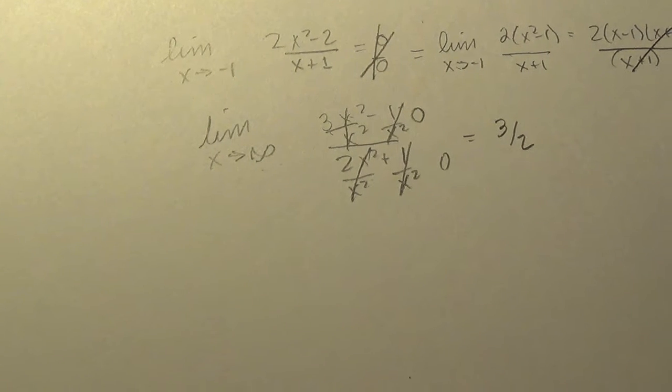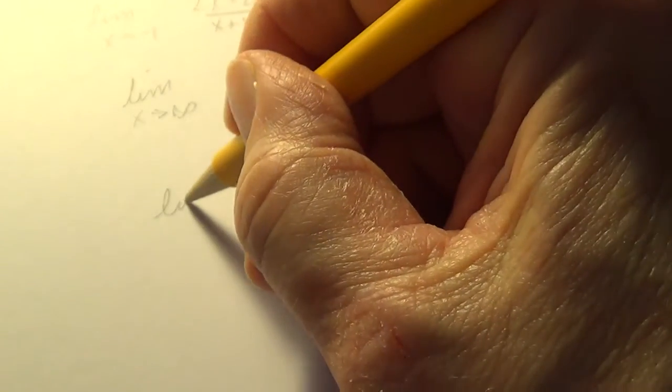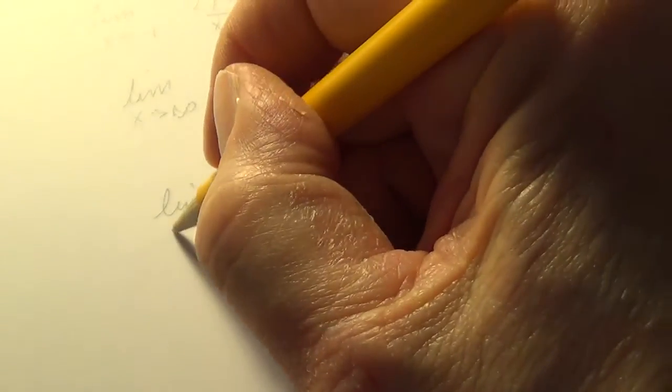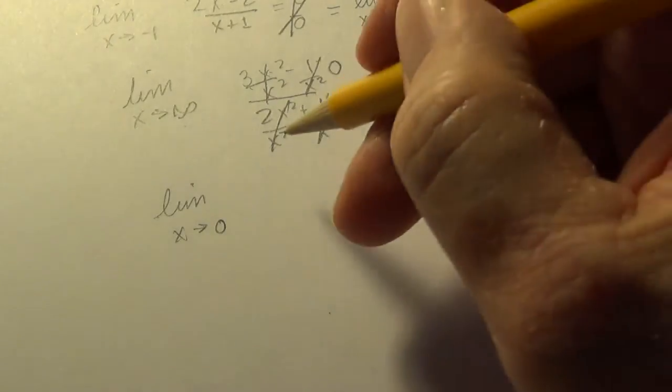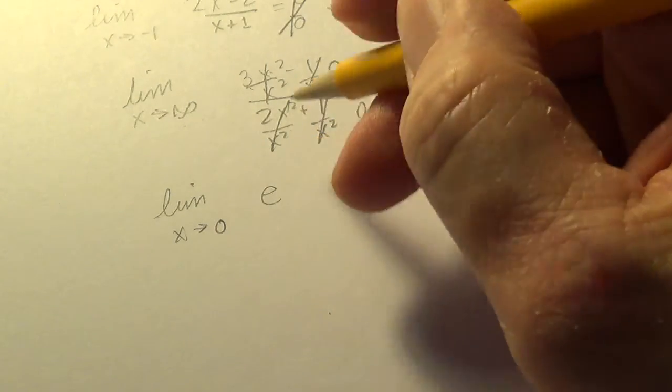And what's the limit as x goes to infinity of 1 over x squared and 1 over x squared? So then we have just a 3 over a 2. So we've seen that in the past as well.